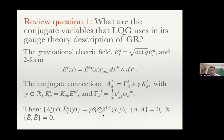We talked about the gamma parameter — it's a real parameter in the theory, representing a canonical transformation to these variables. It has a physical consequence: if you think of the area spectrum, measuring a surface yields only certain quantum values, and the spacing between those quantum values is controlled by gamma. So that's its physical interpretation. It's called the Barbero-Immirzi parameter. The connection commutes with itself and the electric field density commutes with itself as well.